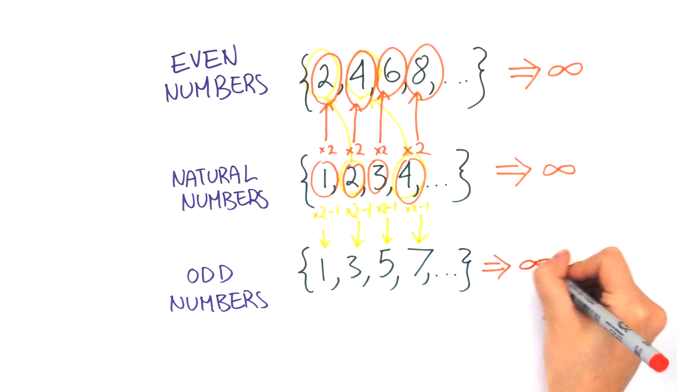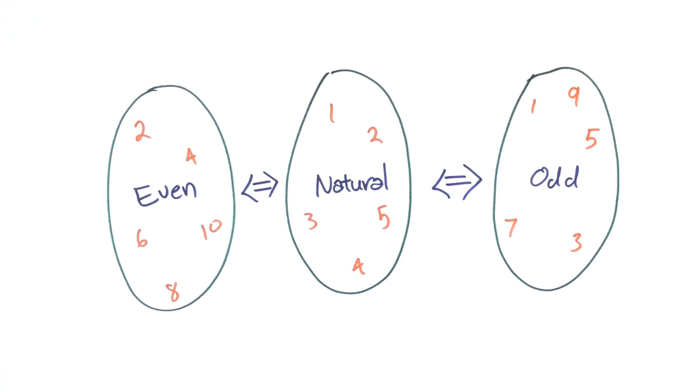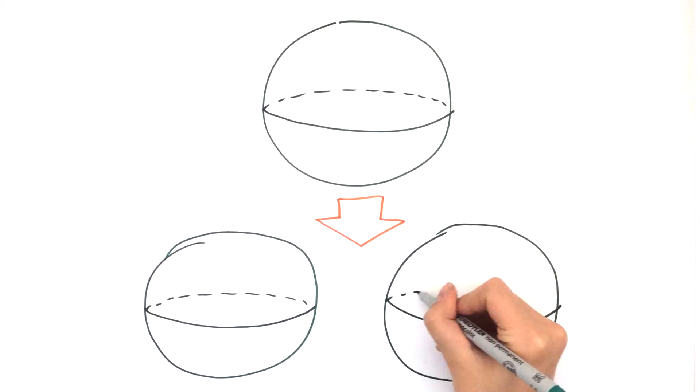Therefore, the sets of even and odd numbers are both infinitely large. We have just created two sets out of one where all three are infinitely large, and that's how with an infinite collection of points, you can turn one sphere into two identical spheres.